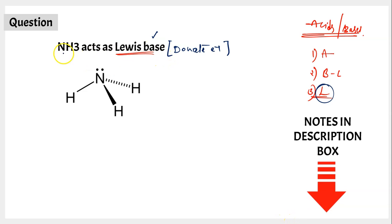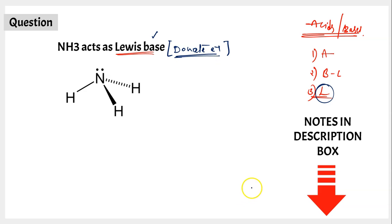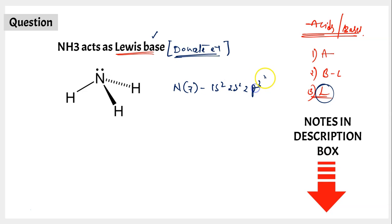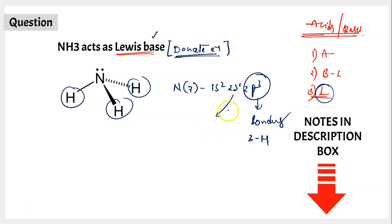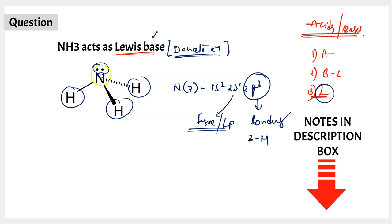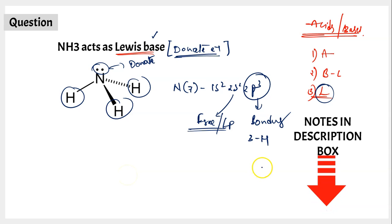NH3 acts as a Lewis base. In NH3, nitrogen's configuration is 1s², 2s², 2p³. The three 2p electrons are involved in chemical bonding with the three hydrogen atoms. The 2s electrons are still available in the valence shell but not participating in any chemical bonding — so they are a lone pair. These lone pair electrons are available to be donated. Since nitrogen in NH3 can donate its lone pair from 2s, it acts as a Lewis base.